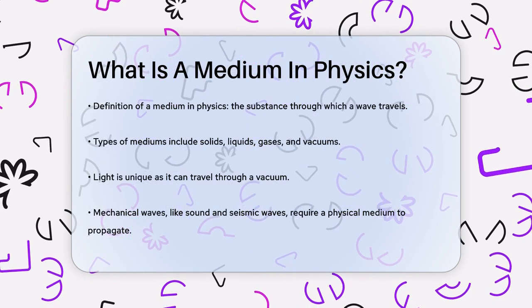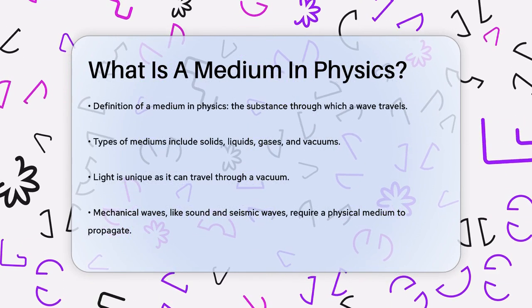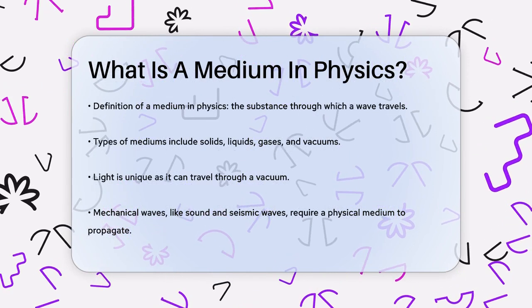This can include solids, liquids, gases, and even in some cases, a vacuum. Although light is the only type of wave that can travel through a vacuum.